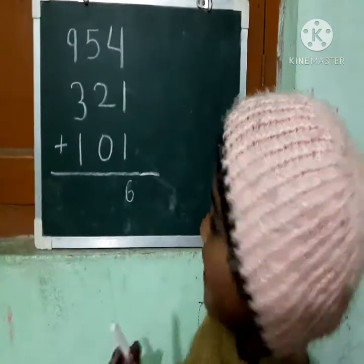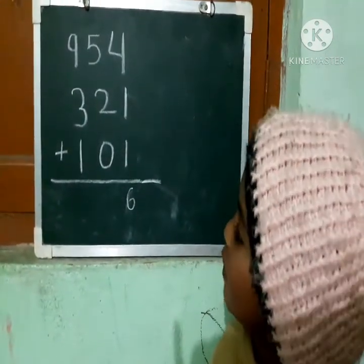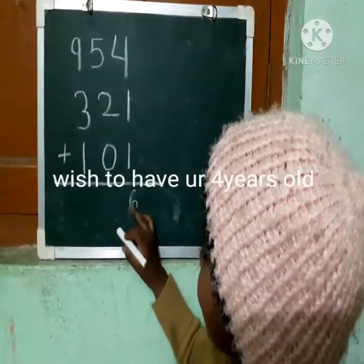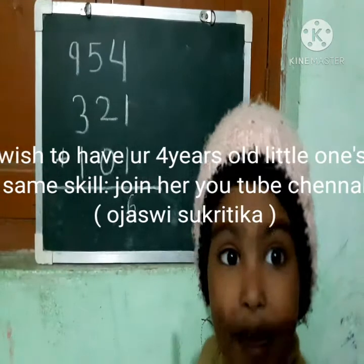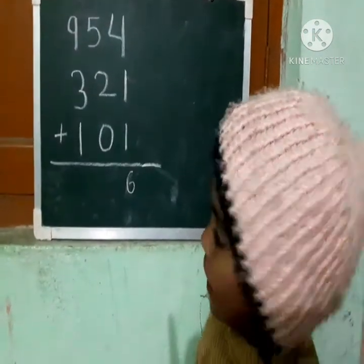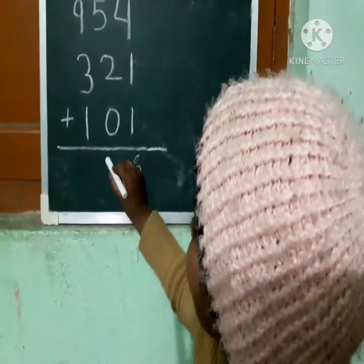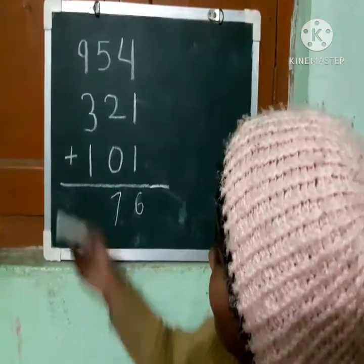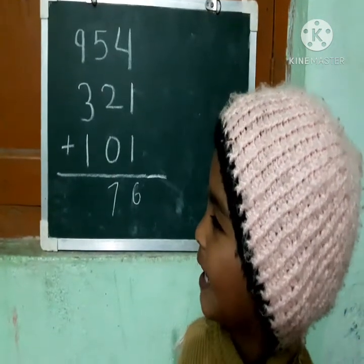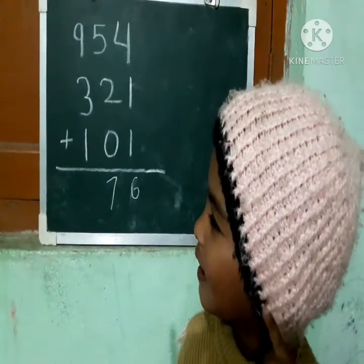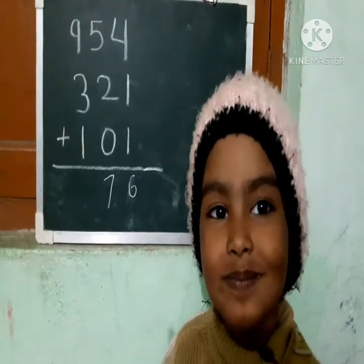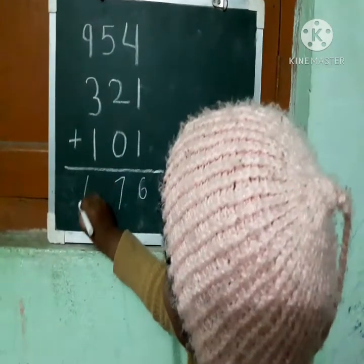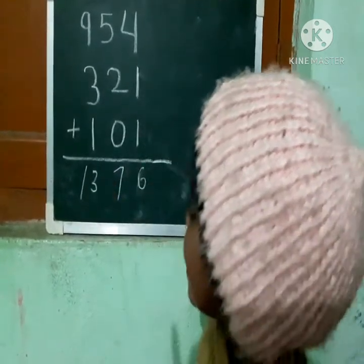5 plus 2 is 7. 7 plus 1 — 7 plus 0 is 7. Any number added with 0 is itself. 9 plus 3 is — guess — 12. 12 plus 1 is — guess — 10.